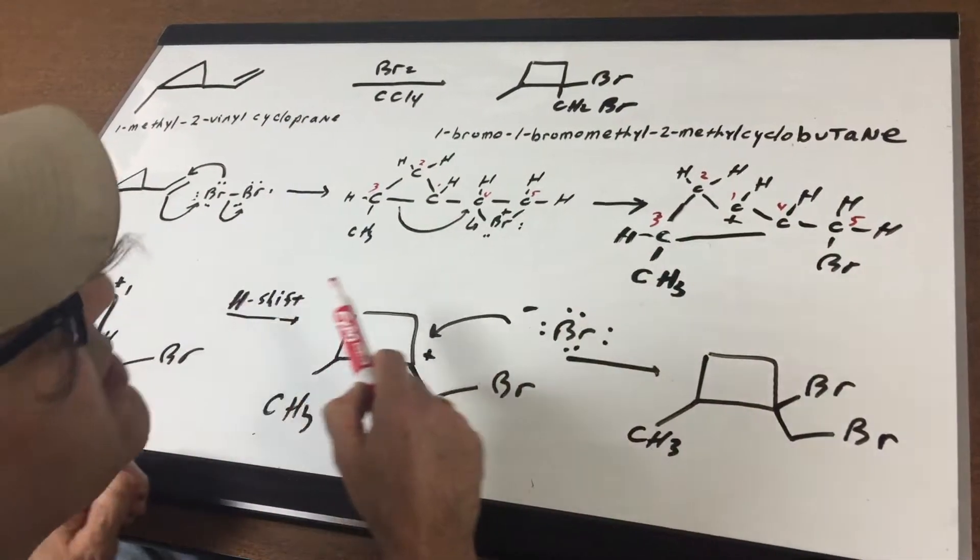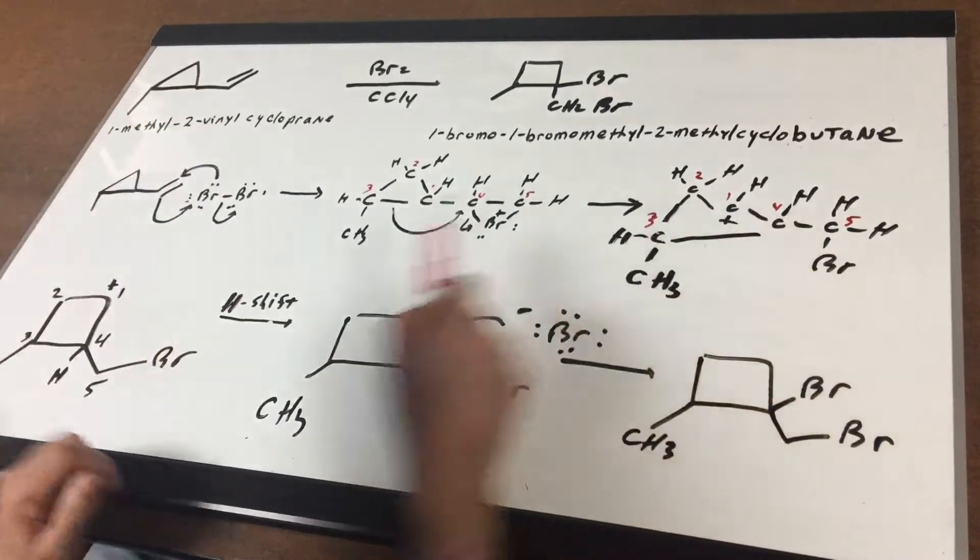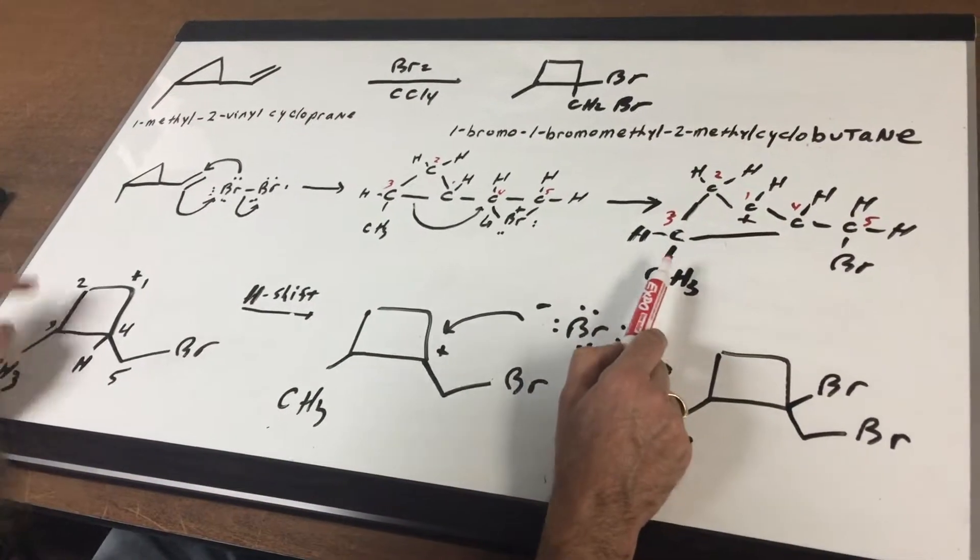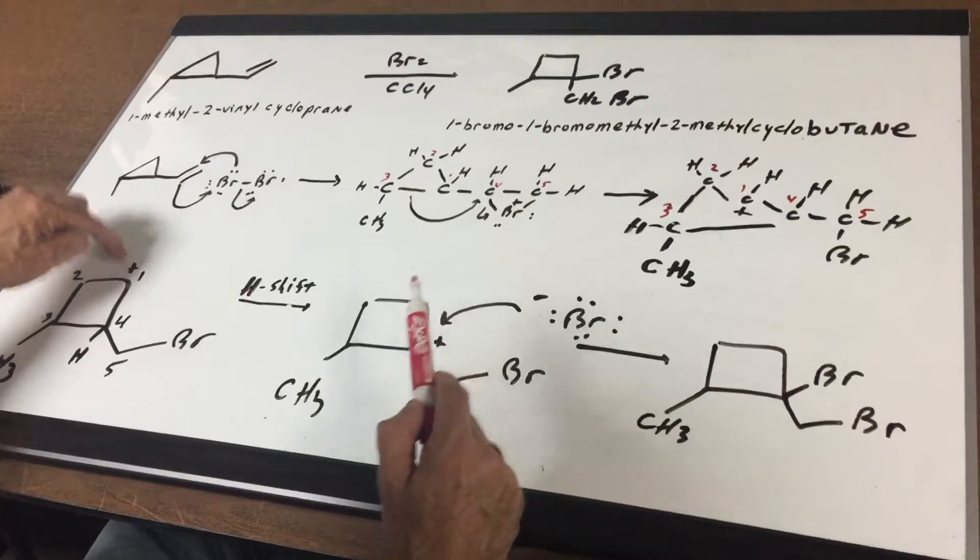Now I'm gonna rewrite this a little prettier. This is one, two, three, four carbons. There's my four carbon box. Number three is the carbon with the methyl, there's the CH2, the carbon with the plus charge was number one.